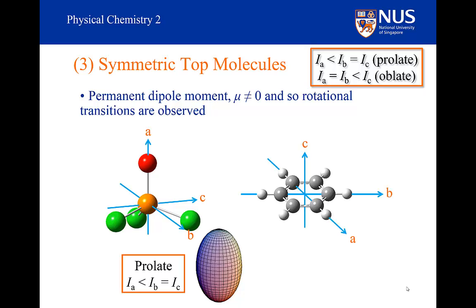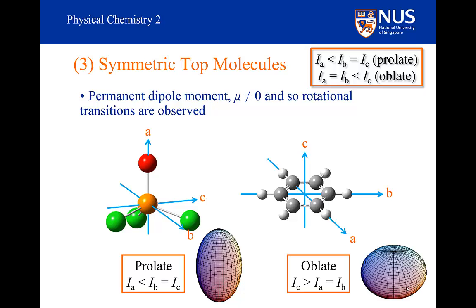This is benzene, and this is an oblate molecule. The moment of inertia around the C axis is larger than around the A and B axes — in fact, it is twice the size of the moment of inertia around the B and A axes. For this benzene system, you won't see the rotational spectrum because it doesn't have a dipole moment. The reason it is called oblate is that if you map out its rotational constant in space, it would have this kind of flattened M and M shape.